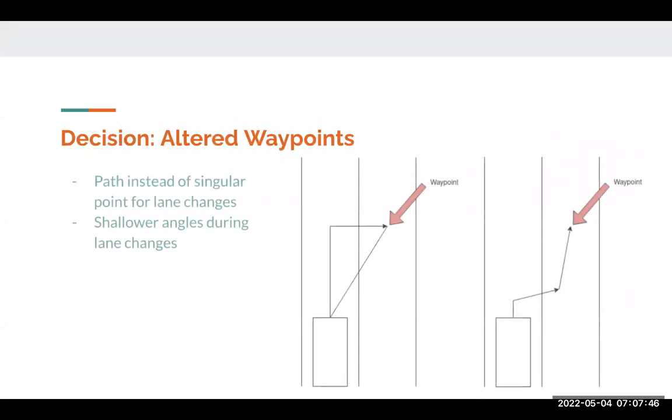So for our decision module originally, the waypoints for lane changes were just generated by taking a 90 degree angle to the center of the lane marker. However, we found that these turns were pretty sharp. So we decided to generate a waypoint path using multiple waypoints at shallower angles to generate a smoother turn.